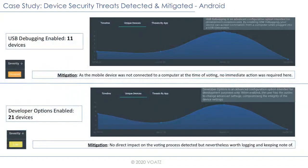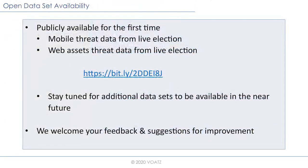A couple of other interesting Android-specific findings: we detected some instances of USB debugging being enabled. Nothing malicious — the phone was not connected to a computer during active voting. We also had 21 devices where developer options were enabled — no direct impact, but something we'd like to keep track of. This data is available as part of our released package, and we'd love feedback and suggestions on how to collect and analyze it better, especially around malware.